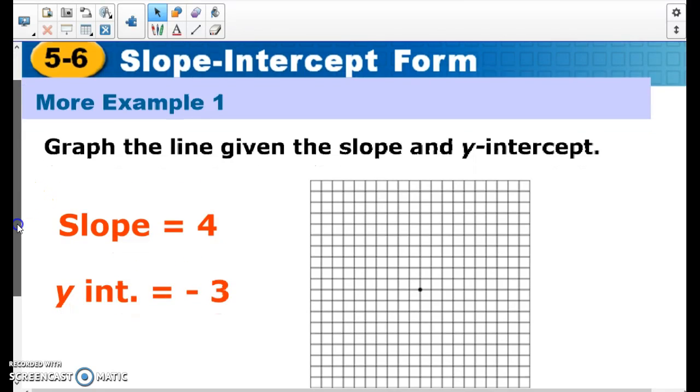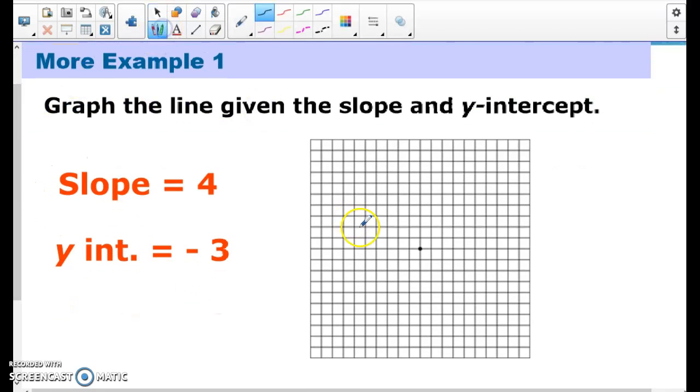Same thing here. My y-intercept is negative 3. So 1, 2, 3, down. And now my slope is 4. But remember, it always has to be a fraction. So it's really 4 over 1. This means I'm going to be going up 4. So 1, 2, 3, 4. And right 1. I'm going to have a dot there.